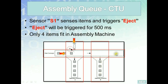You can imagine having multiple side assembly machines C, D, E — as many as we need. The code that we will build for side assembly machine A can simply be duplicated for the other side assembly machines.